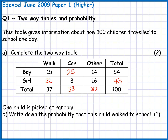Part B. One child is picked at random and we need the probability that this child walked to school. Probabilities are fractions, decimals, or percentages — in this situation it's most sensible to use a fraction. We want the chance of picking somebody who walked out of the total number of pupils. In total we've got 100 pupils, and the number that walked is 37, so the fraction is 37 out of 100. Sometimes you're asked to simplify, which could be worth two marks — check the number of marks on the question. It would also be perfectly okay to write this as 0.37 or as 37%; they all mean the same thing, but the fraction is perfectly fine.